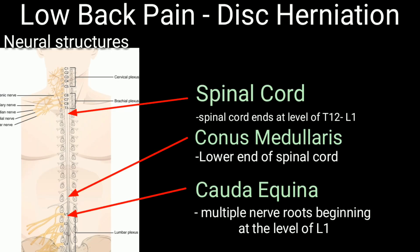The neural structures of the spinal cord end at the level of T12-L1, known as the conus medullaris — the lower end of the spinal cord. Below this is the cauda equina, with multiple nerve roots beginning at the level of L1.